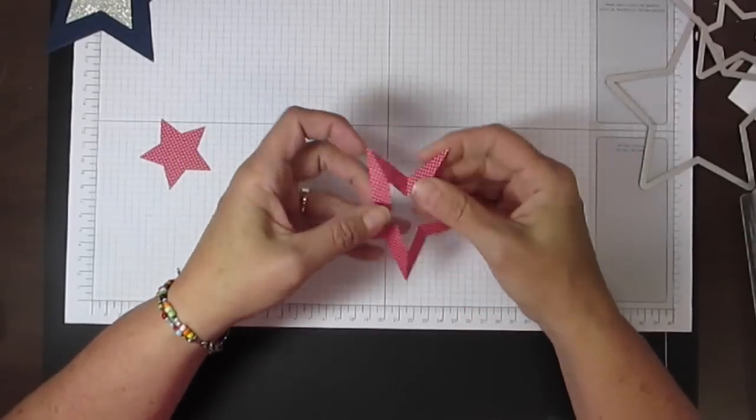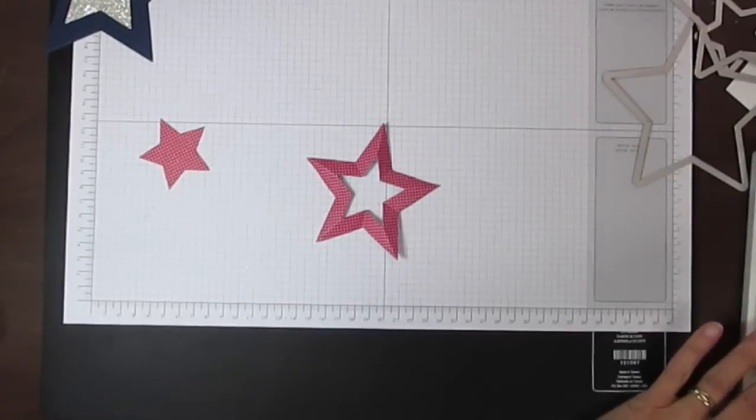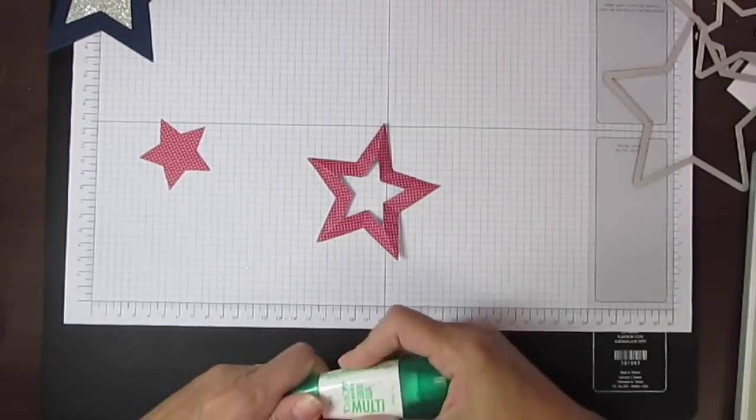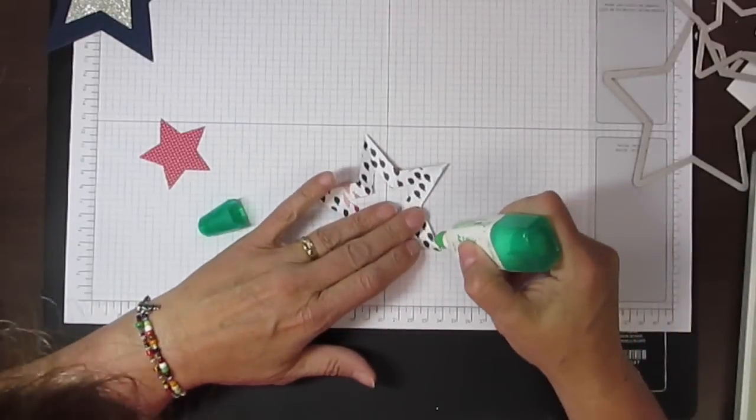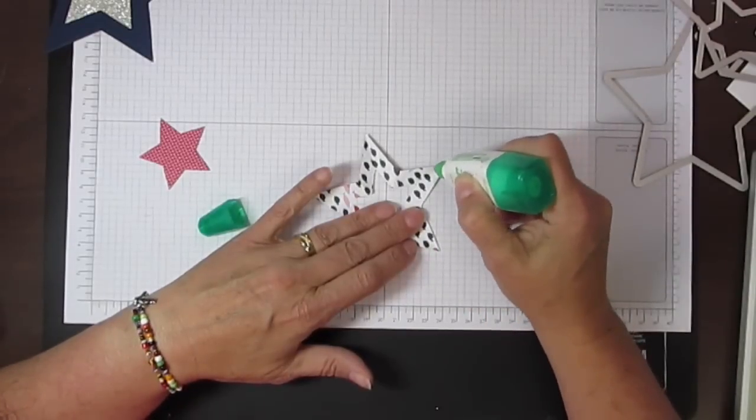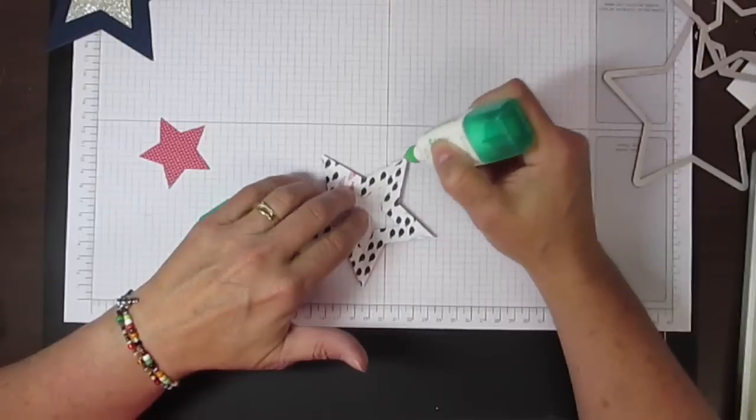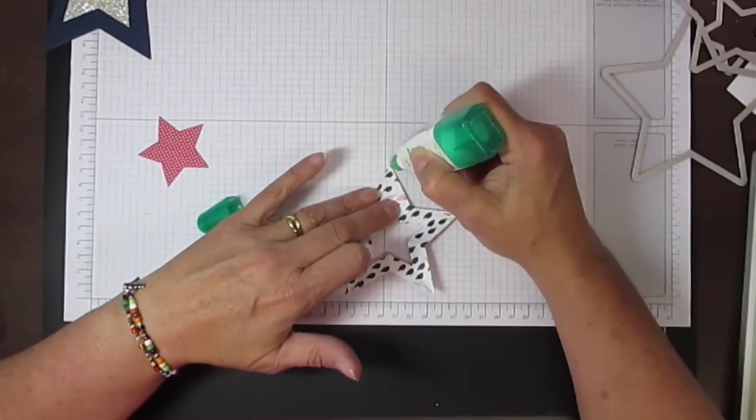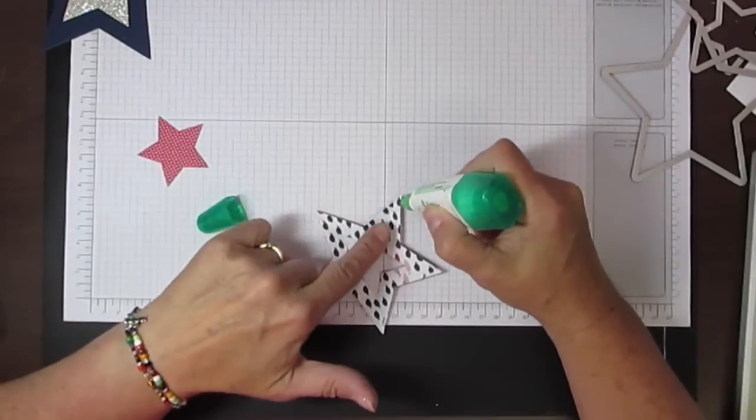Once I've done that, I'm going to take a little bit of our multi-purpose liquid glue and I'm just going to come in here just on the tips, just on the edge of the tips, and add just a little adhesive on each tip.